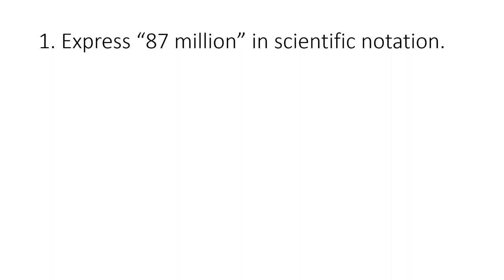The first couple of questions are about scientific notation, which will come up sporadically throughout the semester. When we talk about 87 million in scientific notation, the idea is that when we multiply by 10, we move the decimal point. So if I take 8.7 and multiply by 10, that's 87 — the decimal point has moved one space to the right.